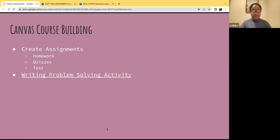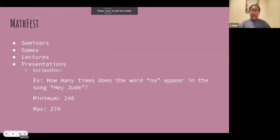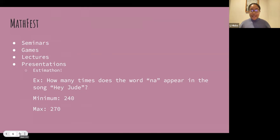Recently I went to Math Fest, which was held in Philadelphia. There were a whole bunch of different seminars, games, lectures, and presentations. One that stood out was the Estimathon — a game where, for example, you'd guess how many times the word 'not' appears in the song 'Hey Jude,' submitting an answer as an interval like 240 to 270. We'd get points based on our answer, and we actually got second place, which was pretty cool.